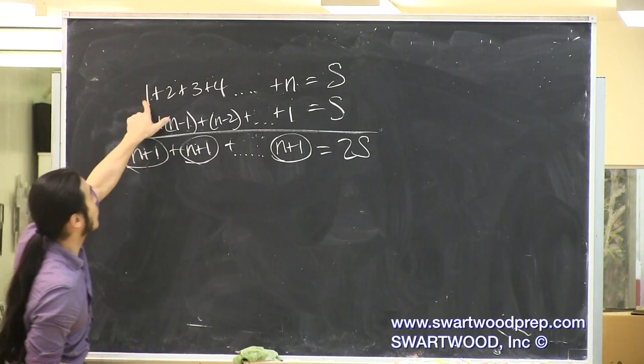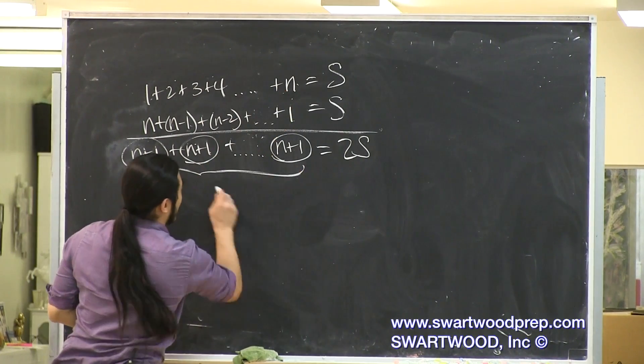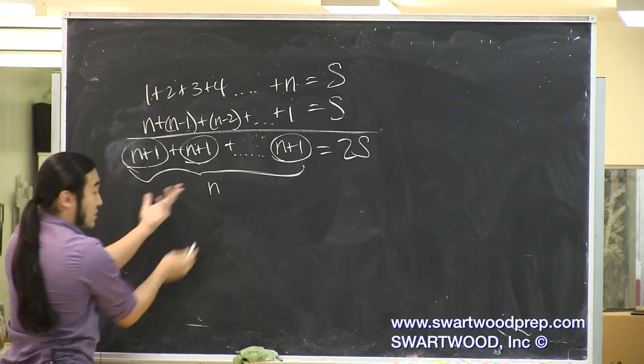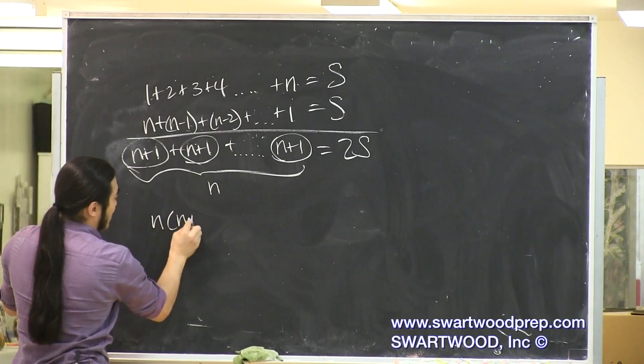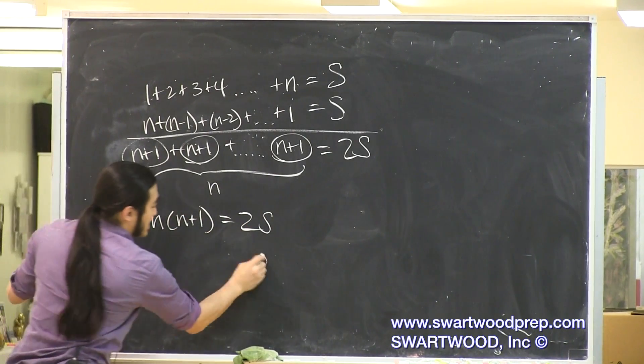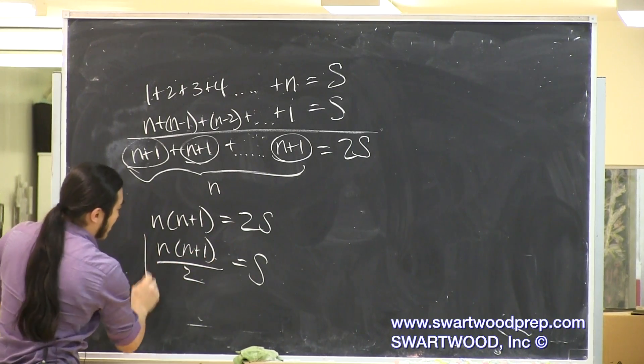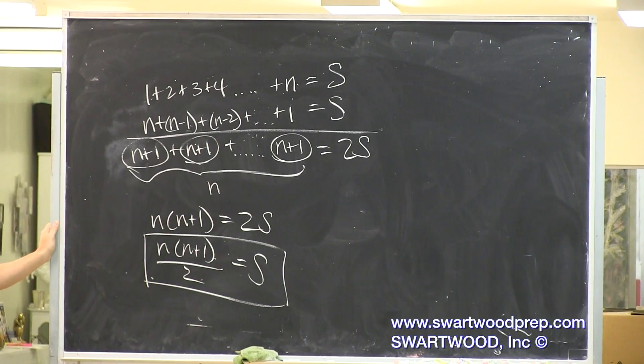How many terms do you have? You have 1, 2, 3, 4, 5, 6, 7, 8, 9, n of them. So you have n of these guys. So I guess the total sum has got to be n times n plus 1. That's equal to twice your sum. So the sum, of course, has got to be n times n plus 1 over 2.